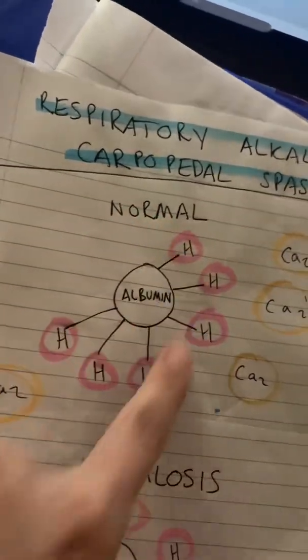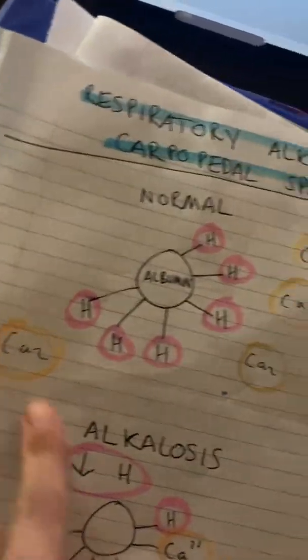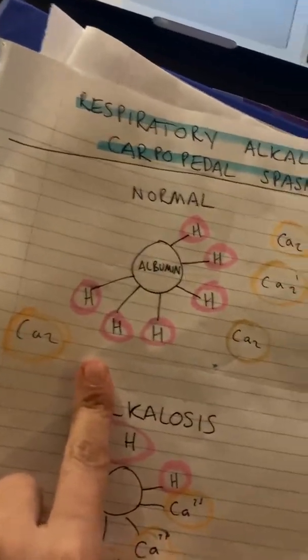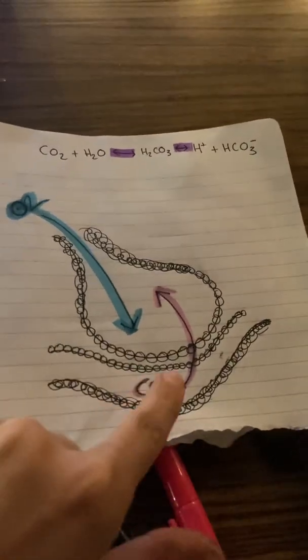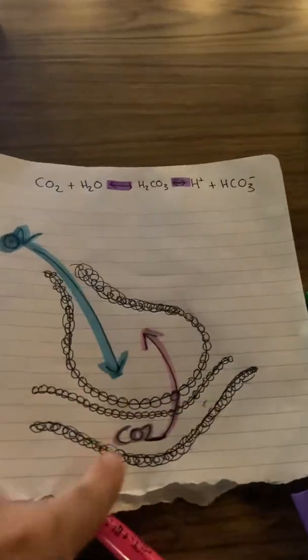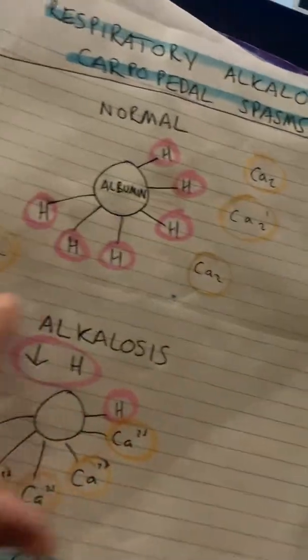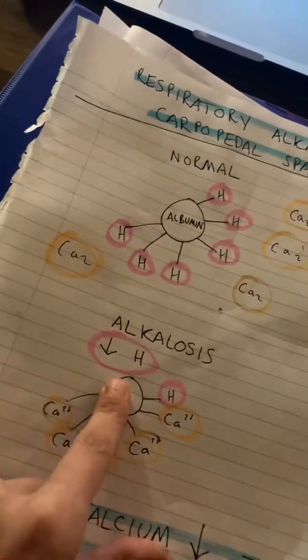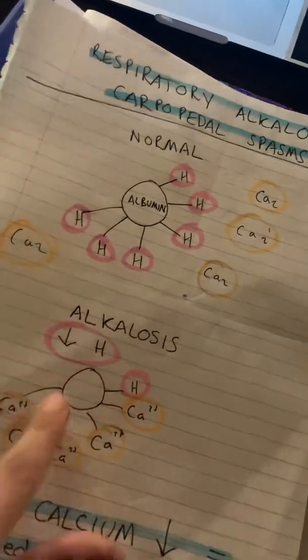One extra thing — this might help explain why you get carpopedal spasms with respiratory alkalosis. Normally, a lot of the hydrogen in the blood is binding to albumin protein, and calcium ions are floating freely in the blood. But remember, respiratory alkalosis decreases CO2, which decreases hydrogen. When hydrogen is decreased, there's not enough hydrogen to bind to albumin, so calcium binds to albumin instead.